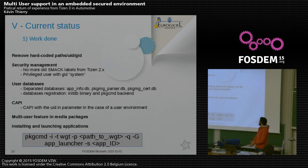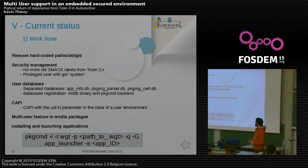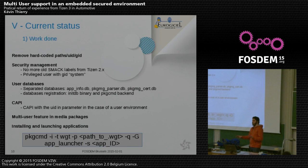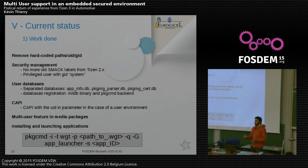To summarize what has been done: we removed all hard-coded paths, UIDs, and GIDs from applications. Many applications had hard-coded usernames, and almost everything has been removed — though it's an ongoing task as some developers add them back. Regarding security management, we don't have smart labels yet due to legacy code from Tizen 2, since the security framework changed completely from Tizen 2 to Tizen 3. Right now we define a privileged user with a GID system — if a user is part of the system group, they are considered privileged. That's a quick choice that can be changed.